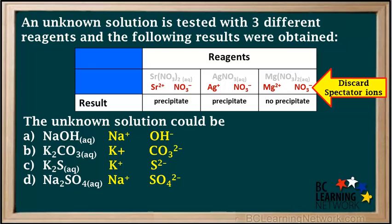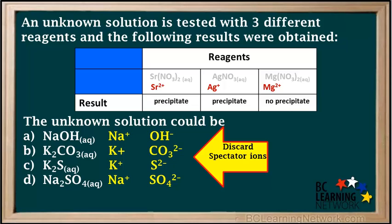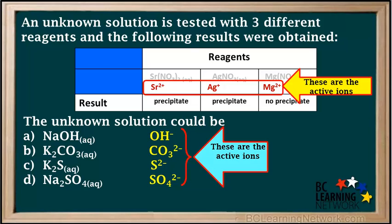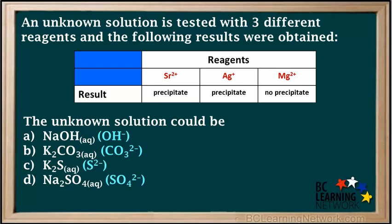We start by discarding the spectator ions in the reagents — these compounds all have a nitrate ion, which we discard. We also discard the spectator ions in the possible answers, which are the sodium and potassium ions. Ions that remain after we've discarded spectators are called active ions. These are the four active ions in the possible answers and the three active ions in the reagents. We'll simplify the table by including only the active ions.